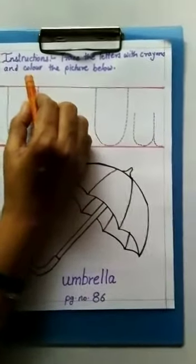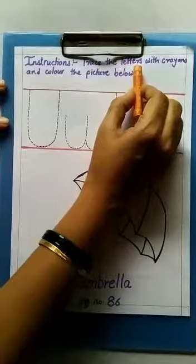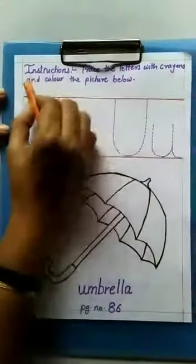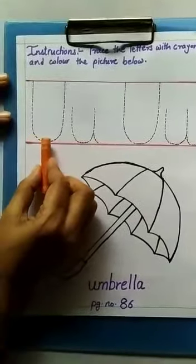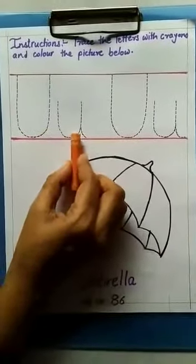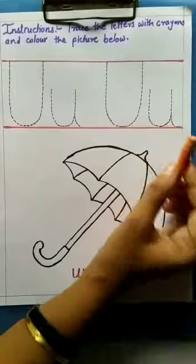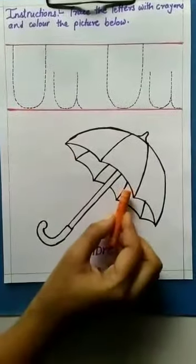First, we will read the instructions. Trace the letters with crayons and color the picture below. Capital U, small u. U for umbrella.